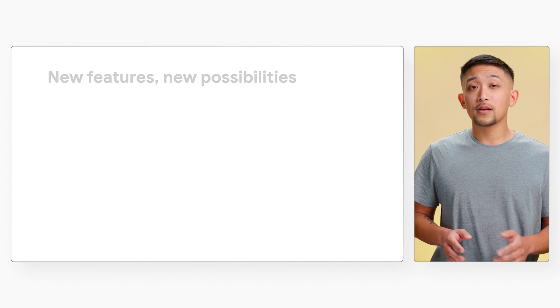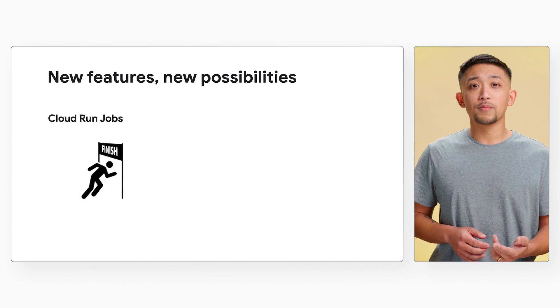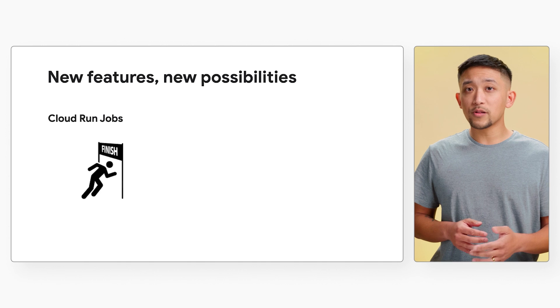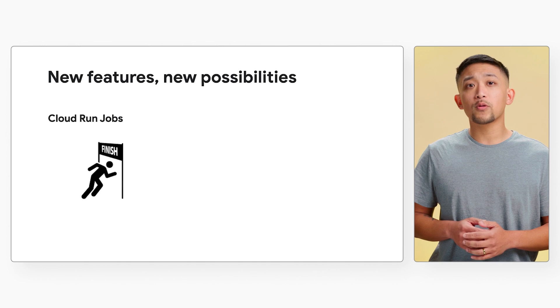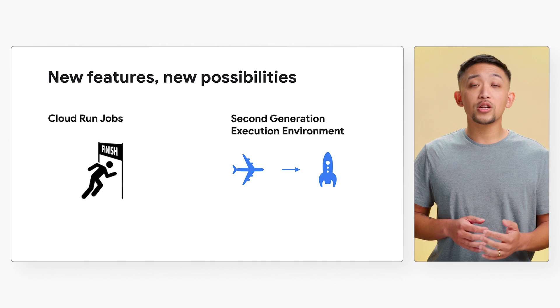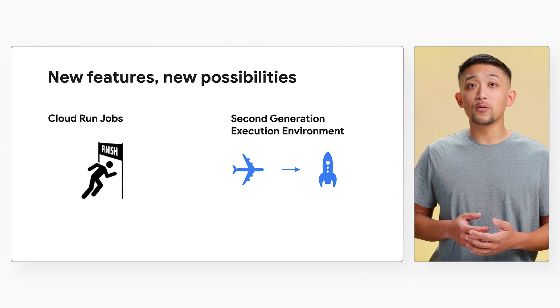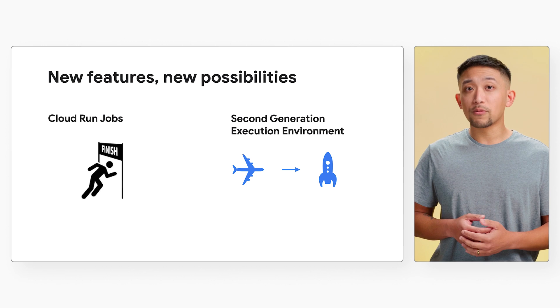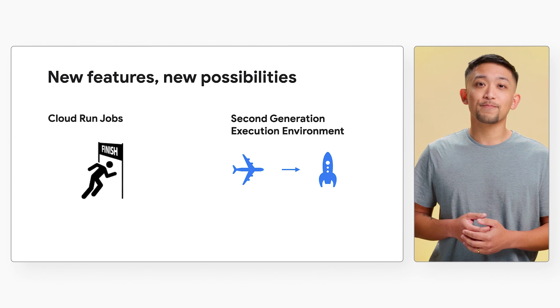Two features in Cloud Run expand our serverless support for more workload types. The first is Cloud Run jobs, which allows you to bring containers with long run-to-completion jobs — no need to hack around HTTP requests and rewrite code. The second is a second generation of our Cloud Run execution environment, providing faster CPU and network performance for intensive workloads, the ability to mount network file systems, and full compatibility with all Linux features.